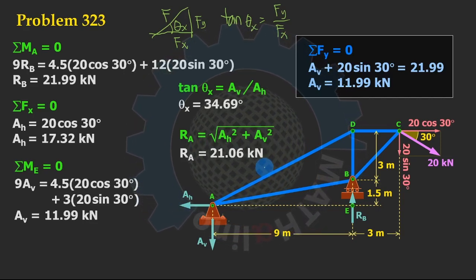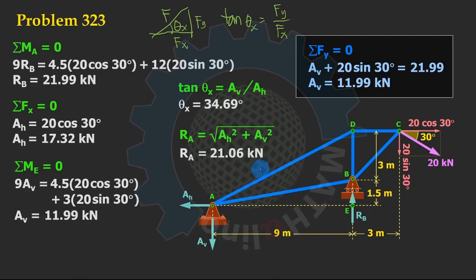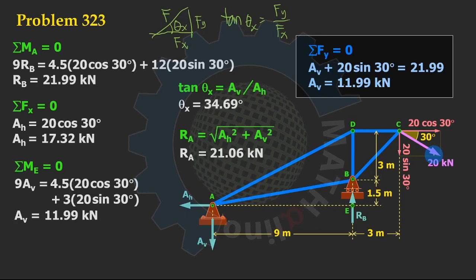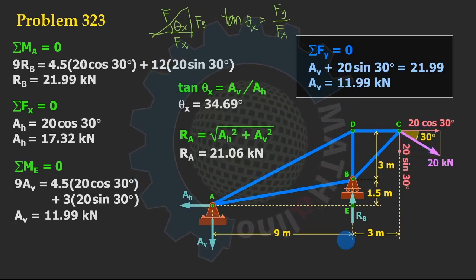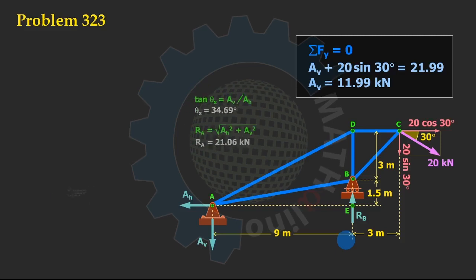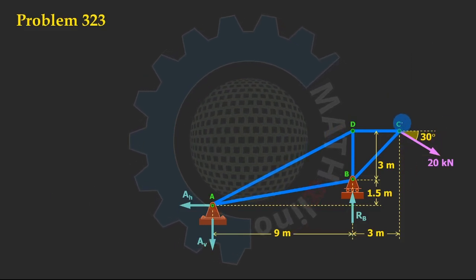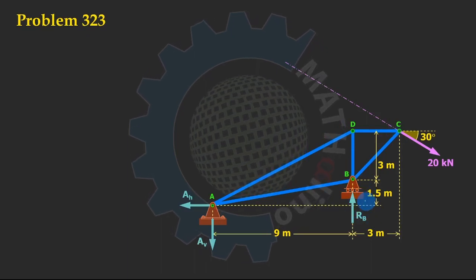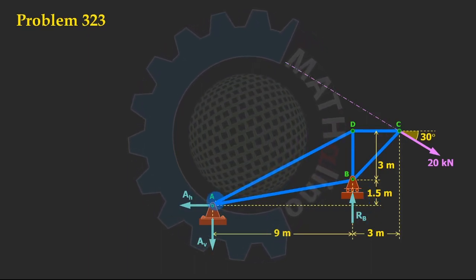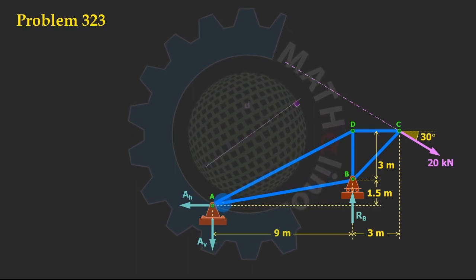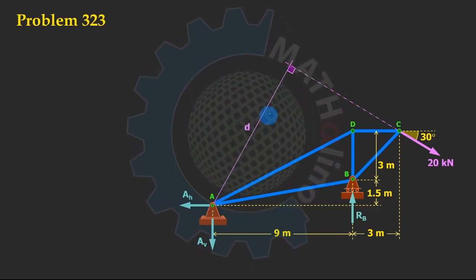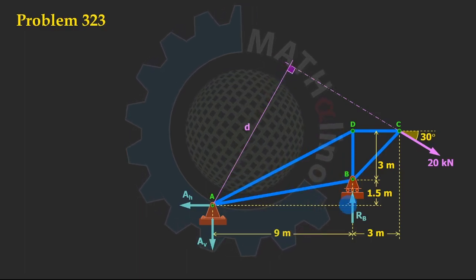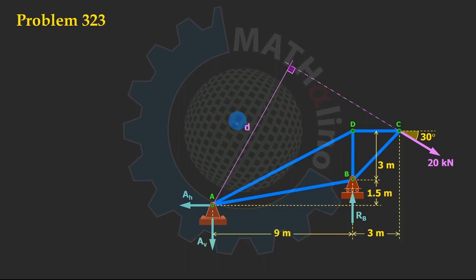For those interested in another approach, continue watching. In our next solution, we are not going to resolve the 20 kilonewton force into components. This is the line of action of the 20 kilonewton force, and to find RB we sum moments at point A. To do that, we need to find the moment arm d.